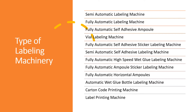Nowadays, even barcodes are being applied, so separate barcode applicators are available. Apart from that, there are label printing machines. Depending on the type of container — for example, if it is a vial — you have a vial-specific labeling machine. There are self-adhesive sticker options, ampule sticker labels, side labeling machines, both-sides labeling machines, and top labeling machines.